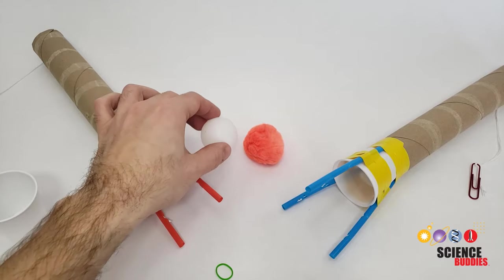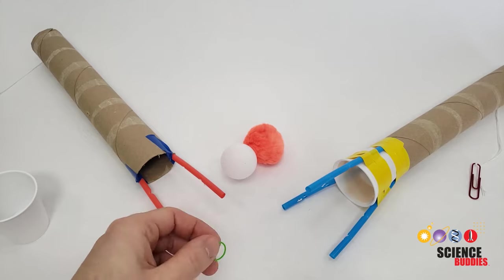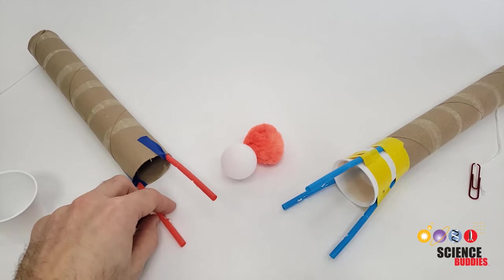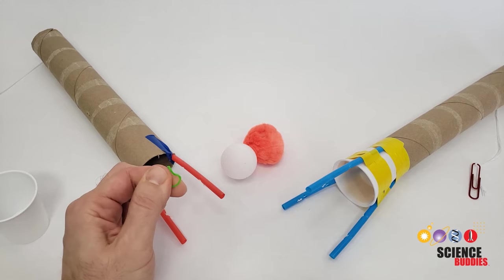You might find, when trying to pick up a smooth object like a ping pong ball, that the straws are too slippery. So you can also experiment with other things to improve their grip and add more friction, for example by wrapping the straws in rubber bands or another material.